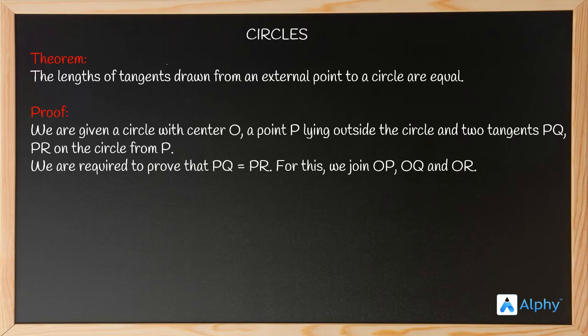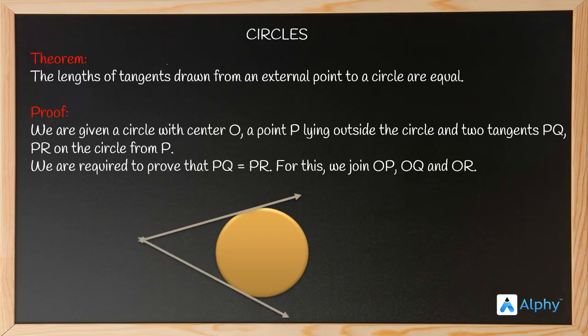So this is the circle, these are the two tangents drawn from external point P, this is the center O. The center O is joined with external point P, and these are the two radii from the center.